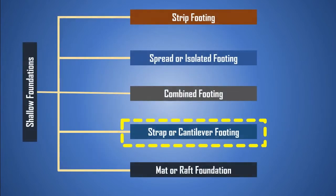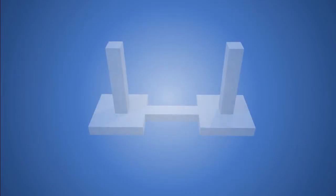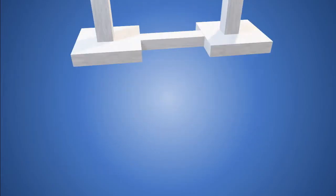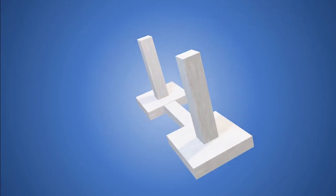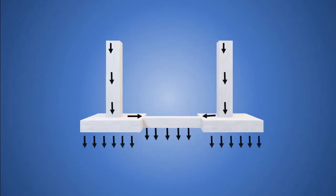Strap or cantilever footing. In this case, two isolated footings are connected with a structural strap or a lever, making the footings behave as one unit. A strap is a rigid beam that helps to transfer the load acting on it safely.